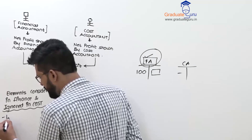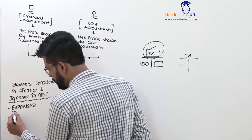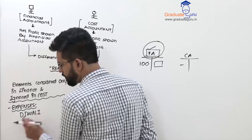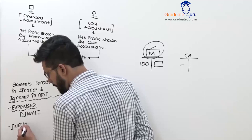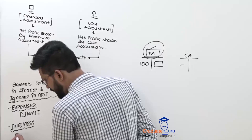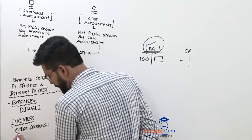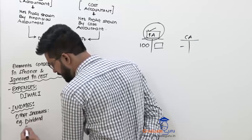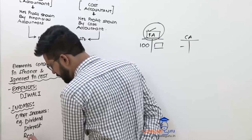What are those elements? If I talk about expenses — examples include donation, income tax written off, etc. If I talk about incomes — there are other incomes, for example: dividend received, interest received, rent received, etc. These are items recorded only in financial accounts and not in cost accounts.